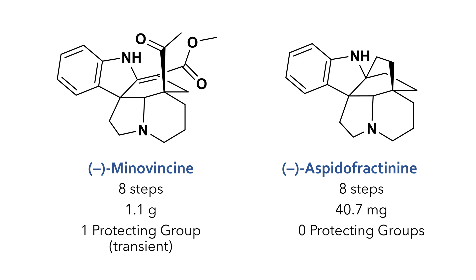So to recap on this work, the authors synthesised minovinsine and aspedofractanine in a highly efficient manner using only eight steps each to construct the complex cage-like structures. Only one chiral catalyst was used to induce chirality, while all the other steps were controlled using meticulously planned reaction sequences which took advantage of the existing chirality to control the stereochemistry. One transient protecting group was used in the study and the reagents and reactions are simple and can be carried out on the multigram scale. This work represents a valuable addition to alkaloid synthesis methodology for its creative and efficient approach to constructing complex polycyclic structures.